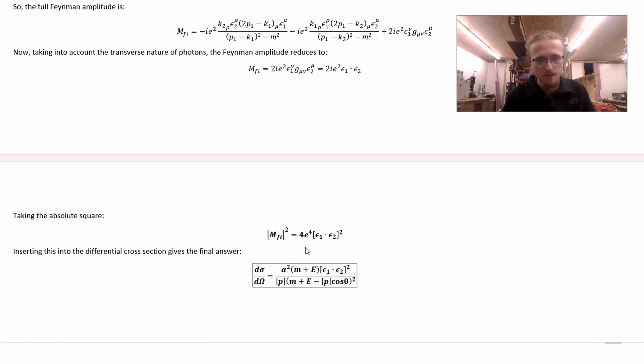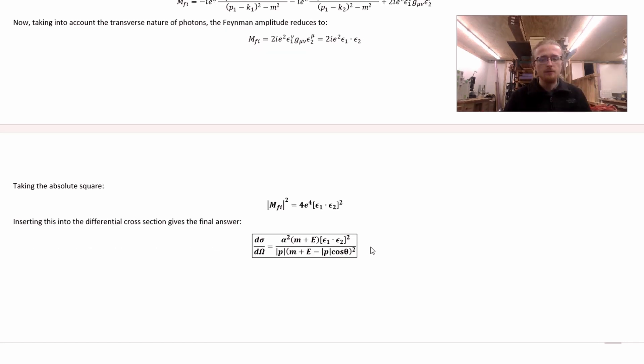The modulus square of the Feynman amplitude, therefore, is this. And if we insert that into the differential scattering cross-section formula that we spent the vast majority of this calculation simplifying down, we get the final result that we're looking for. This right here is the standard result for pair annihilation at the tree level in scalar QED. And it does look a bit different than the result in standard QED. And seeing that is kind of the point of doing this calculation. And so, with that, we are done.